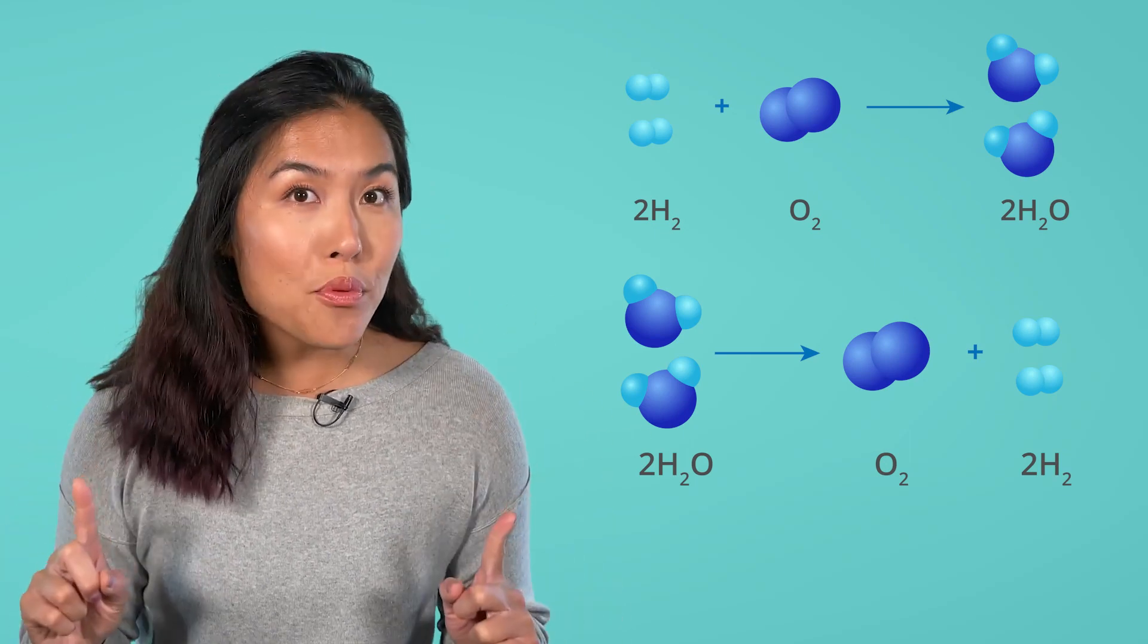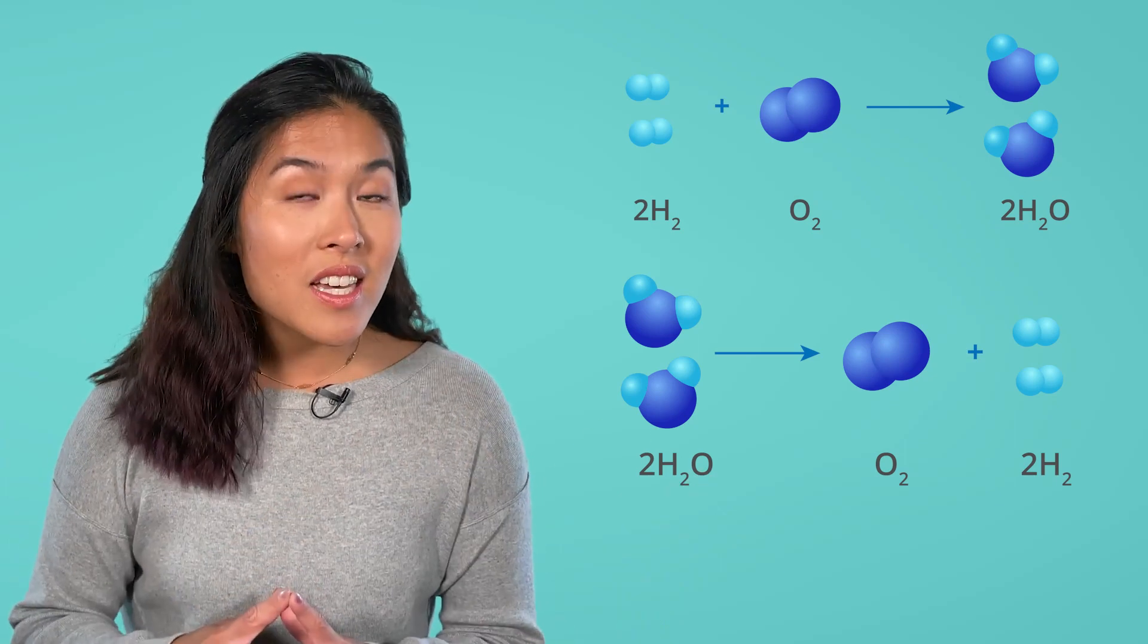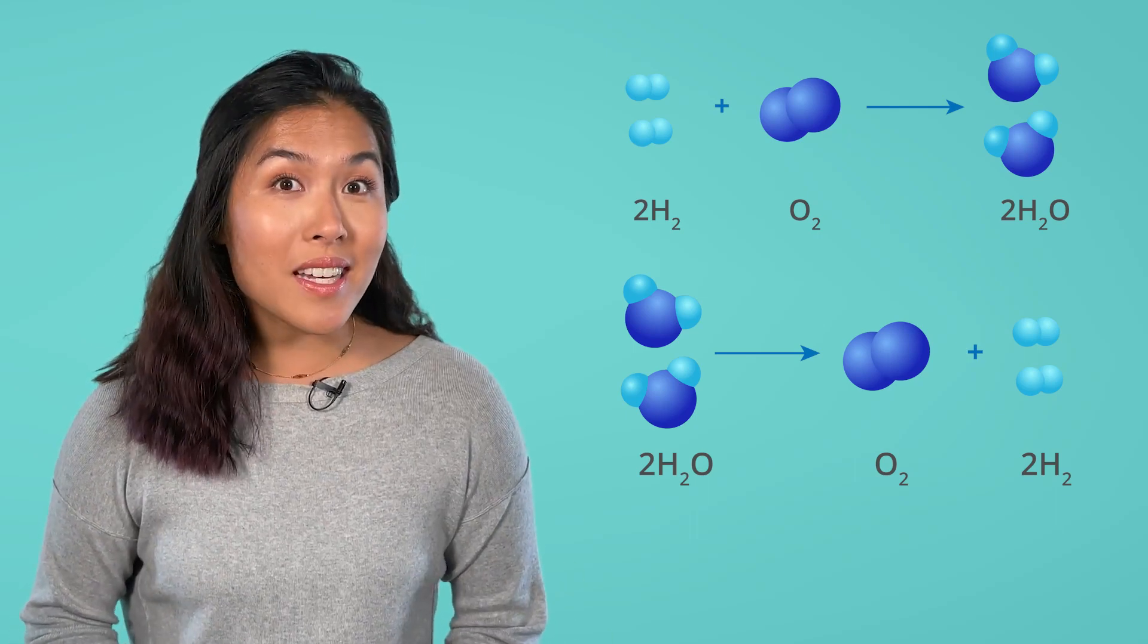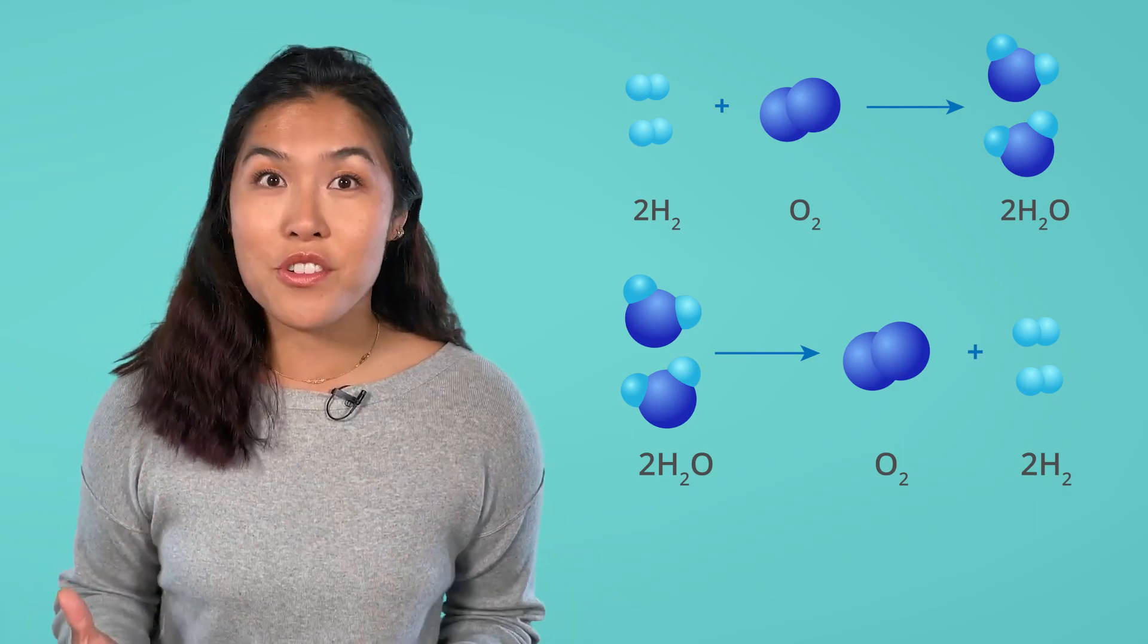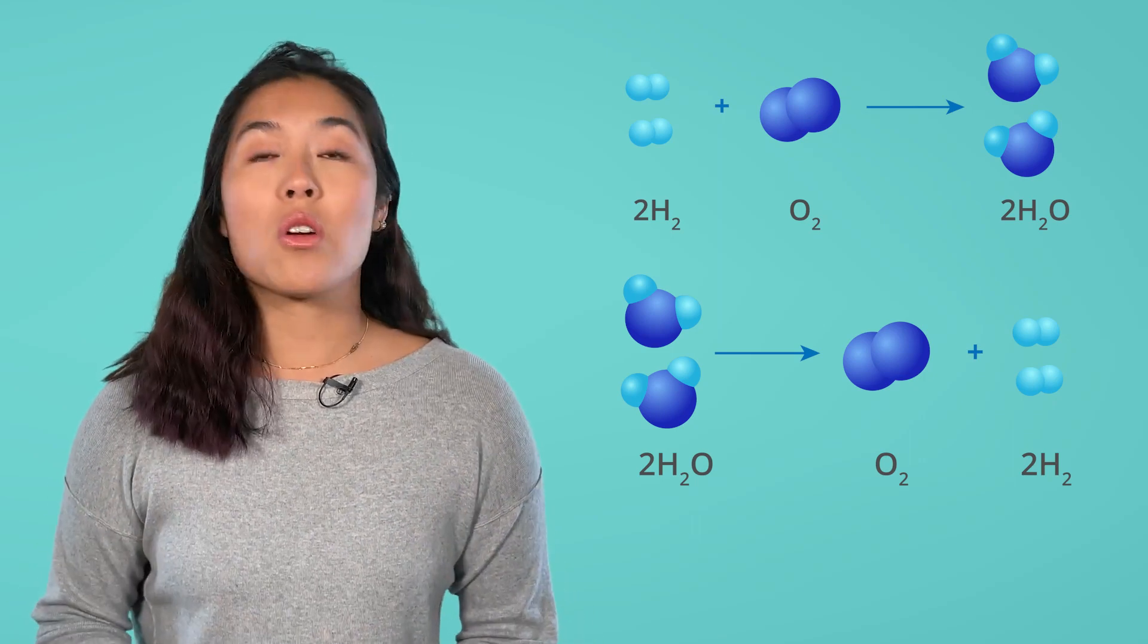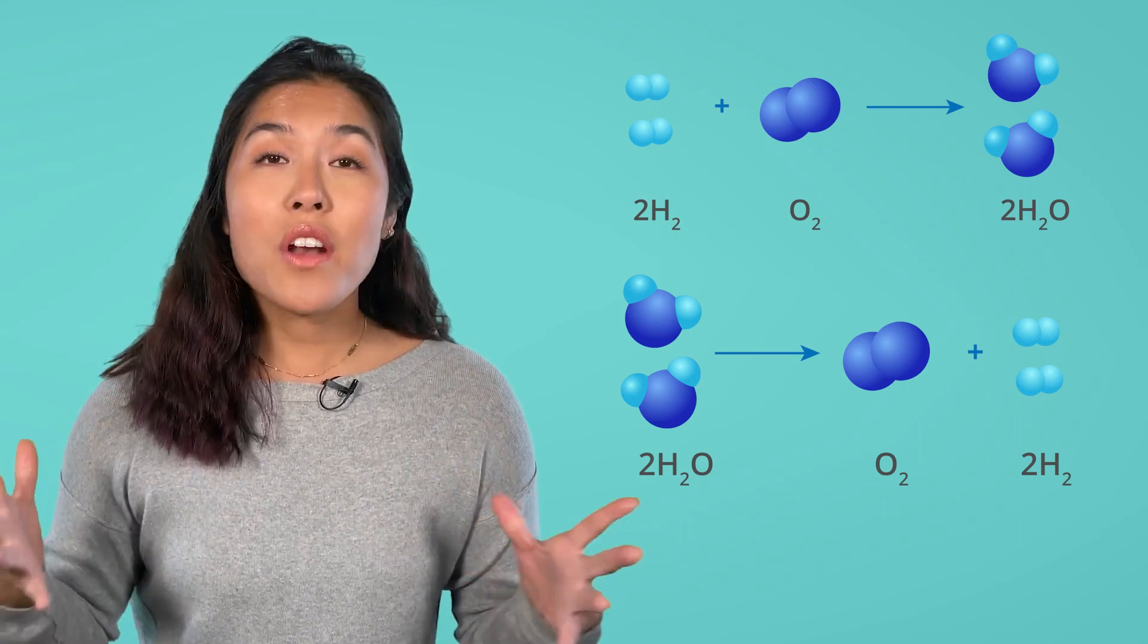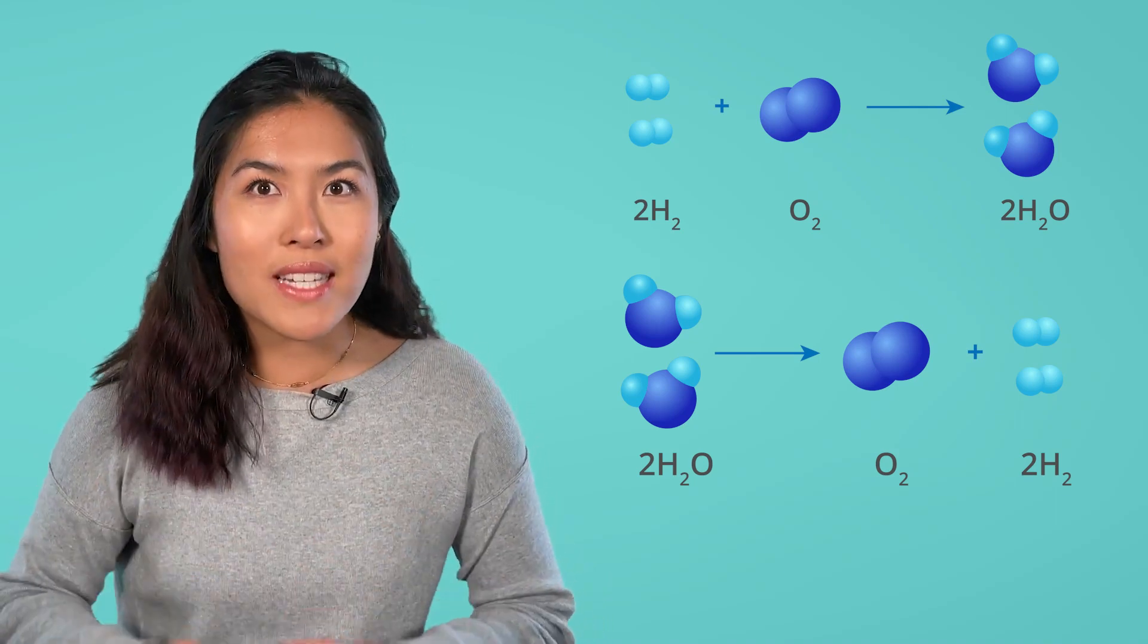In the top reaction, two molecules of hydrogen are reacting with a molecule of oxygen to yield two molecules of water. However, in the bottom reaction, the opposite is happening. Two water molecules are breaking apart to form two hydrogen molecules and an oxygen molecule. While the same molecules are involved in both reactions, the reactions are different. In the top equation, water is being formed, and in the bottom equation, water is being broken down.